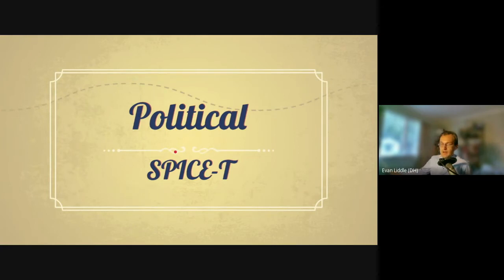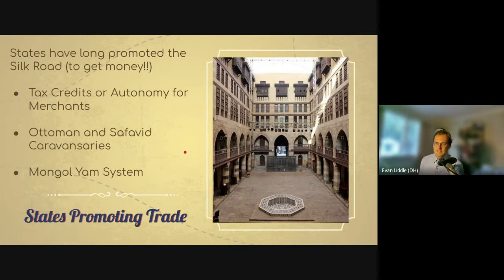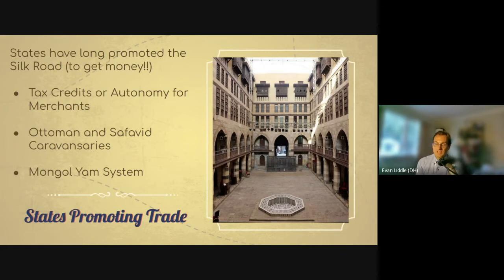Let's shift to politics. States promoted, sponsored, and protected trade — and the reason is simple: trade brings money. If trade increases, citizens get richer, you can tax them more, and you get more powerful. States would give tax credits or grant merchants special autonomy, like their own communities. Chinese cities famously had whole neighborhoods dedicated to specific merchant groups with their own rules and laws. The later gunpowder empires like the Ottomans and Safavids built extensive networks of caravanserais — places where merchants could rest their pack animals and stay safely, often at a heavily discounted rate.